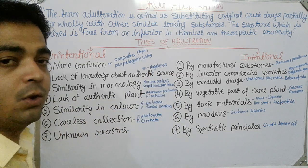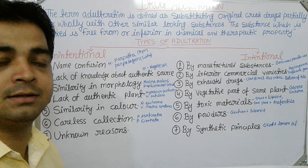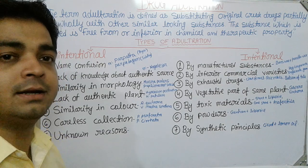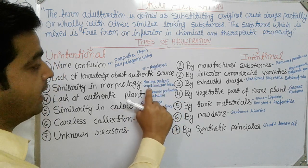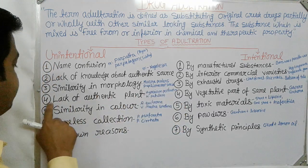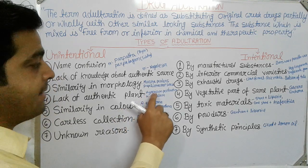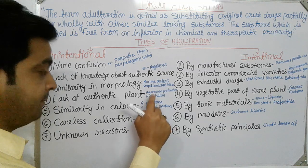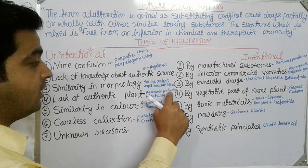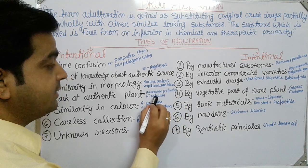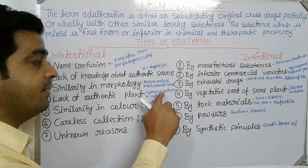The third type is similarity in morphology. When morphology is the same during collection from forest or cultivated sources, confusion arises. For example, Mucuna puriens is substituted or adulterated by Papilionaceae seeds during collection. The fourth type is lack of authentic plant — for example, Hypericum perforatum is not available in a particular area, so Hypericum patulum is collected and sold in its name.